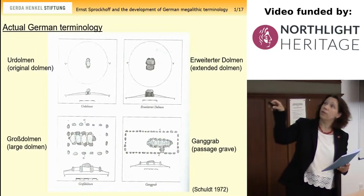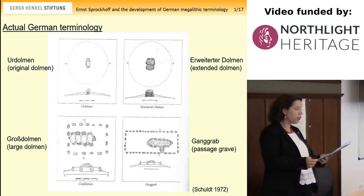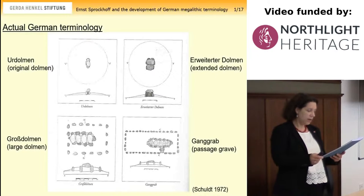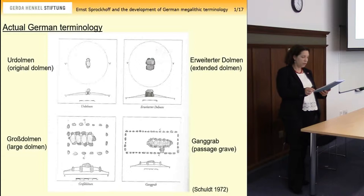Particularly, the structure called Ganggräb in German does not, in its architectural design, in any way correspond to the literal translation for megalithic monuments — the passage grave, dolmen allées, tumbe de corredor, gongrift, or Ganggräb — found in other European regions.